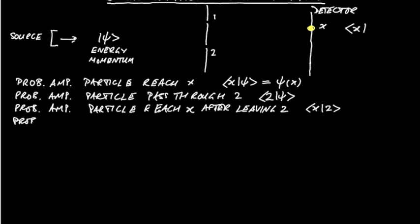For the particle to reach x and pass through slit 2, via 2. In this case we're going to have, we start off with a particle in state ψ, it goes through slit 2 so we have ket ψ bra 2, but then we want the particle to leave slit 2 so that's ket 2 and reach x which is bra x. So that is our total probability amplitude to reach x via slit 2.